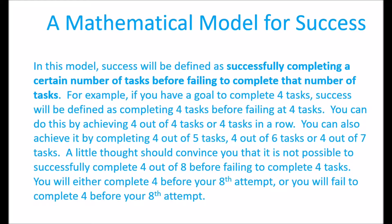For example, if you have a goal to complete four tasks, success will be defined as completing four tasks before failing at four tasks. You can achieve this goal by achieving four tasks in a row, but you can also achieve it by completing four out of five, four out of six, or four out of seven.